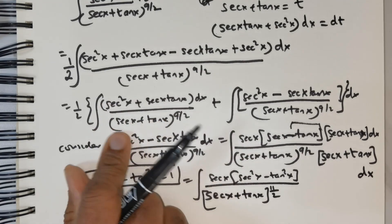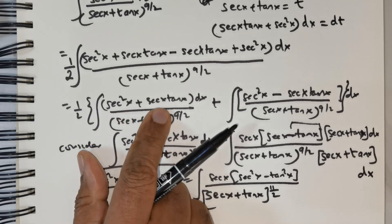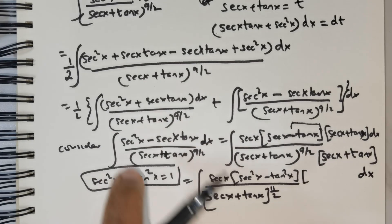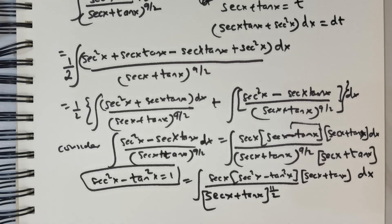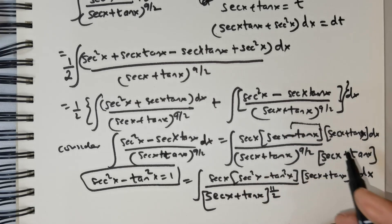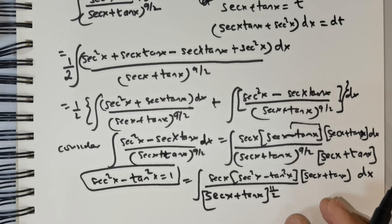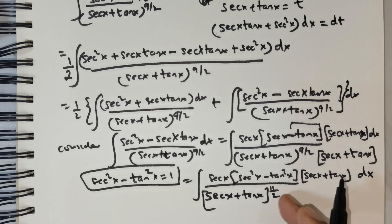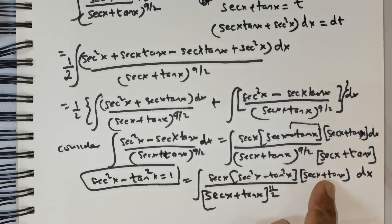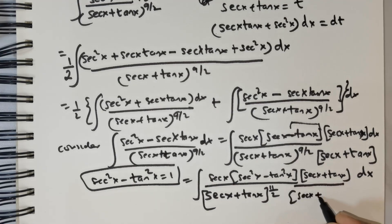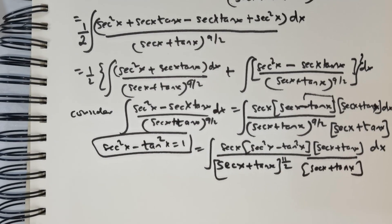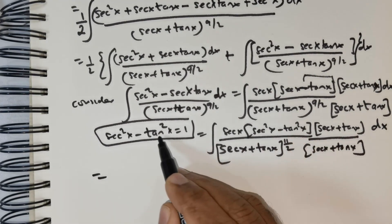Recalling the previous step, distributing secant x over the numerator gives secant squared x plus secant x tan x, which matches our substitution pattern. I need to balance the denominator again by multiplying by secant x plus tan x. Using secant squared x minus tan squared x equals 1, that factor disappears. What remains is secant x times secant x plus tan x with the differential dx, divided by secant x plus tan x raised to the power of 11 over 2 plus 1 equals 13 over 2.